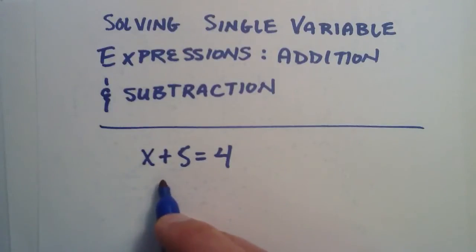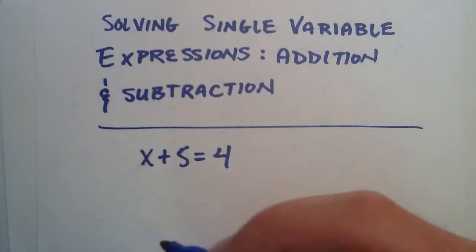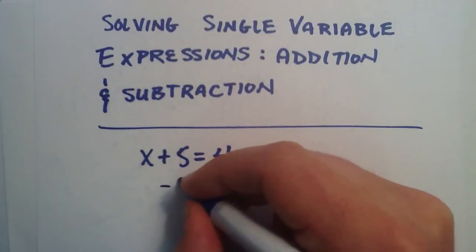So, we're going to use that idea to solve this single variable expression. And by solving it, I mean we're going to figure out what value x has to be in order for this statement to be true. So, let's take away 5 from both sides.